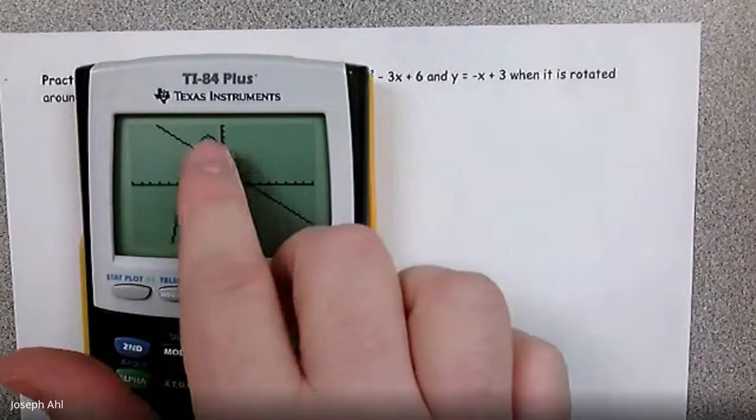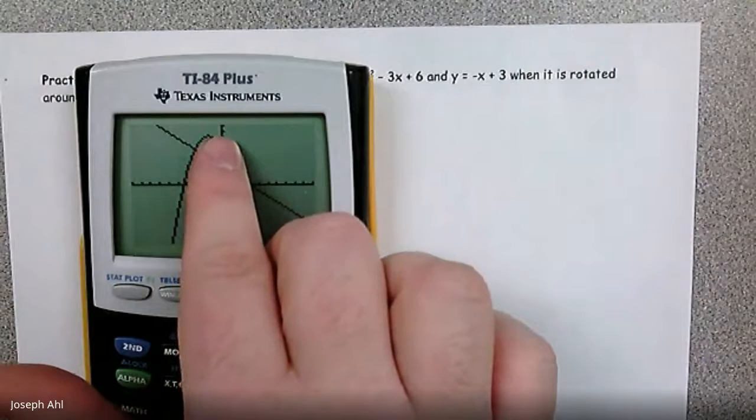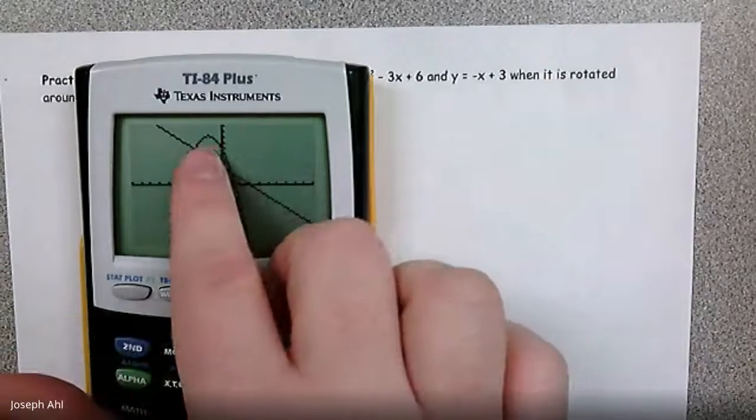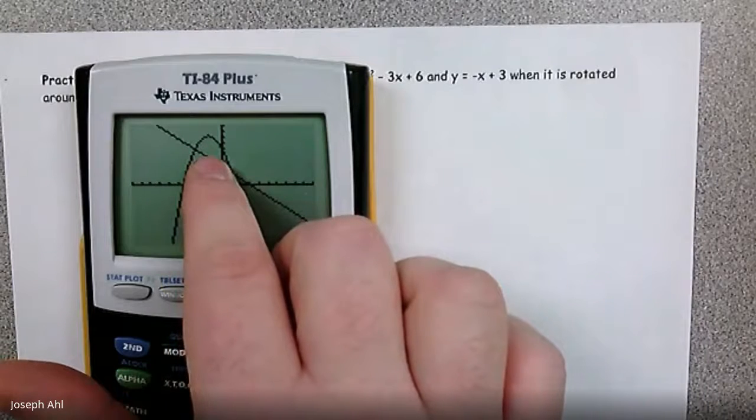So if we were going to do shell, we would get to draw vertical rectangles, because then those would be parallel to the axis that we're revolving around. If we want to use washer, we have to then do horizontal rectangles.